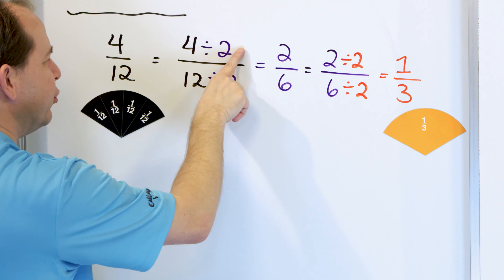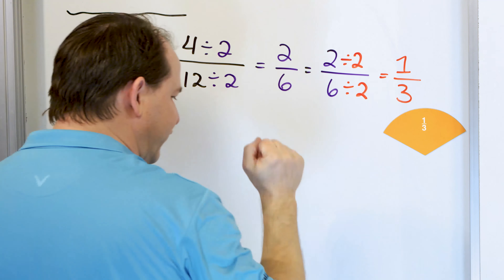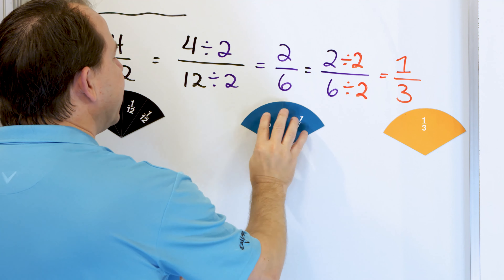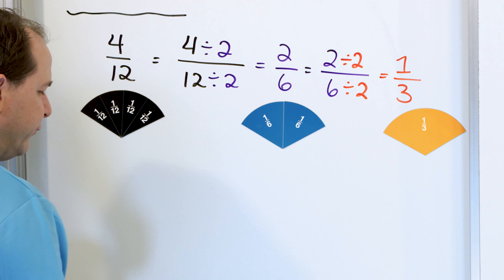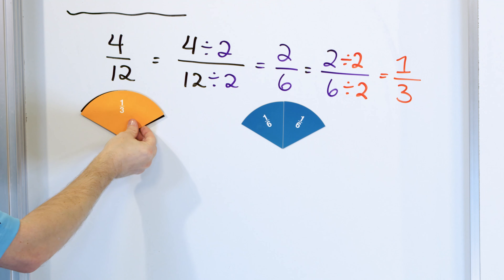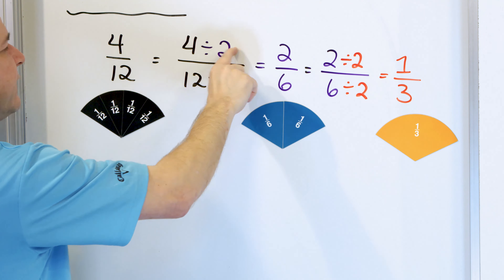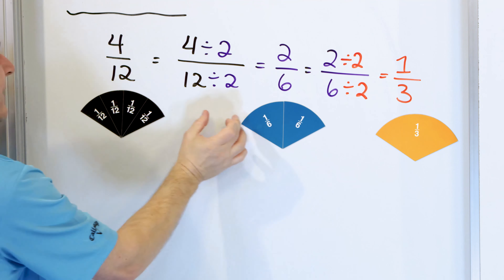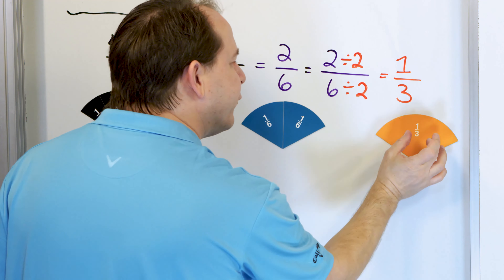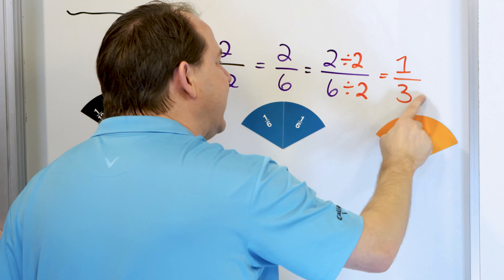First we divided by two to get two-sixths, and then we simplified further in a second step to get one-third. Here's two-sixths — one-sixth, two-sixths. Because these are cut into six larger slices, you can see that one-third is exactly the same as two-sixths, which is also exactly the same as four-twelfths. When I divide this fraction by two on the top and bottom, I get two-sixths. It's not fully simplified yet, but when we divide by two again, we get one-third, which is fully simplified.